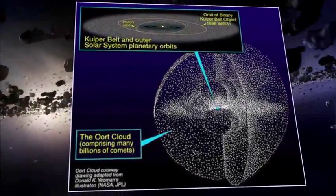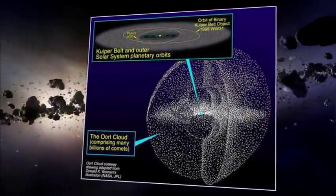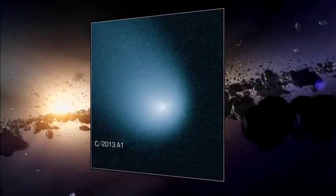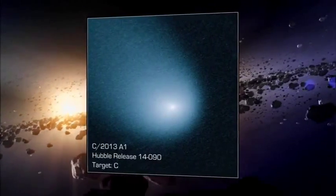Extending nearly one light year from the Sun, the Oort Cloud is thought to be the reservoir of comets like C2013A1, better known as Comet Siding Spring.